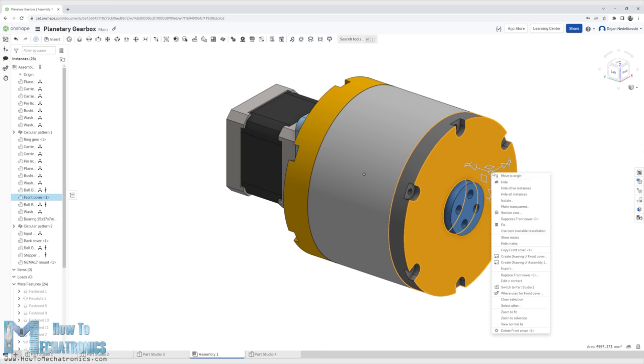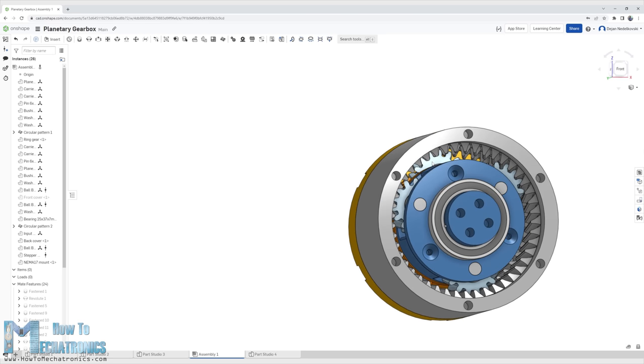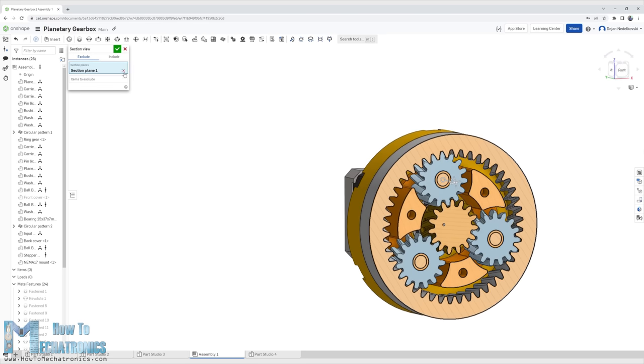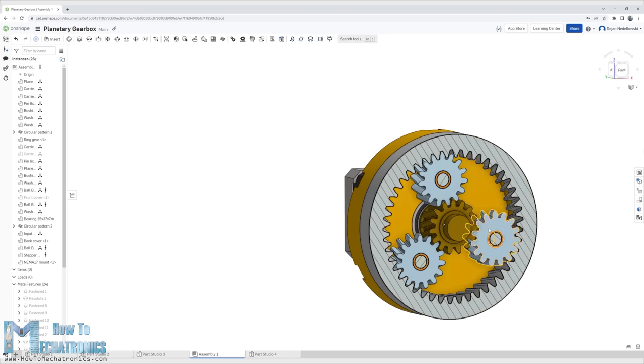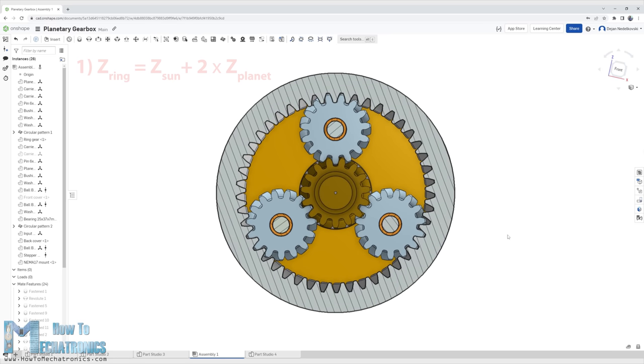Though there are some rules that we need to follow when choosing the number of teeth of the gears in order for the planetary gearbox to work properly. The first rule is that the ring gear teeth number must be equal to the sun gear plus 2 times the planet gear teeth number. That basically means that the sun and two planet gears must fit inside the ring gear.